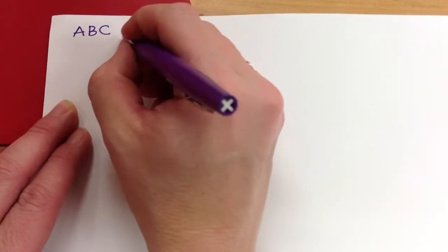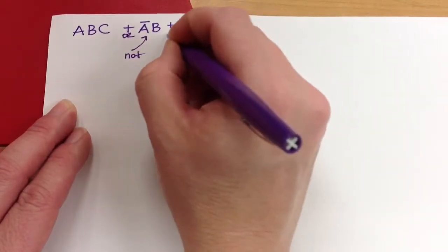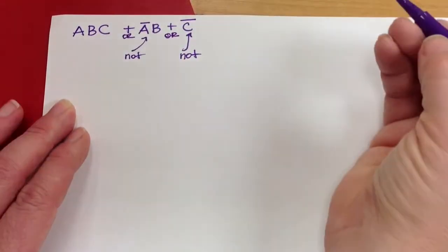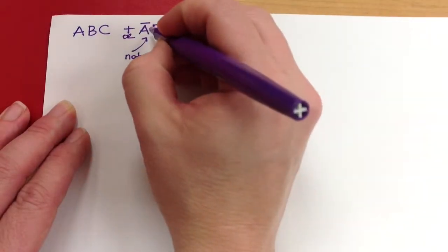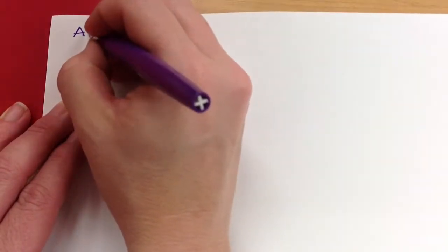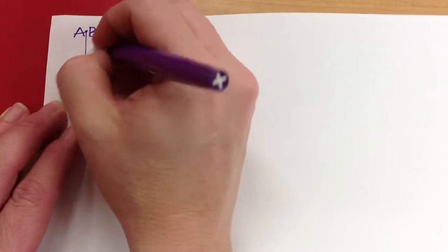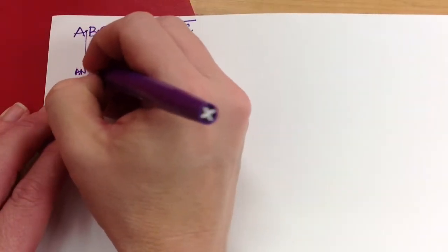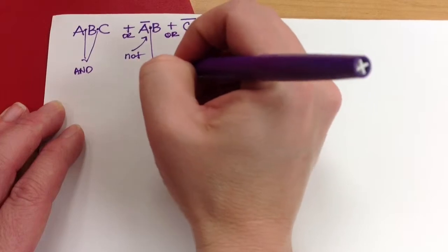Now those plus signs, they'll be OR gates. And then here, and here, and here, these are AND gates, and this one is an AND gate.